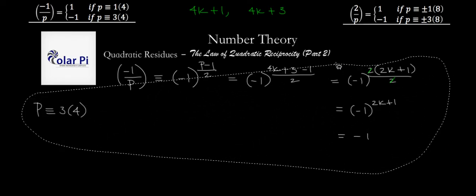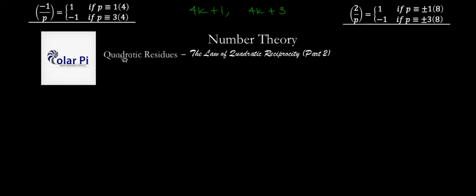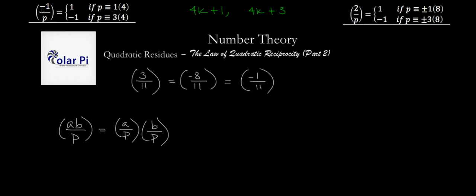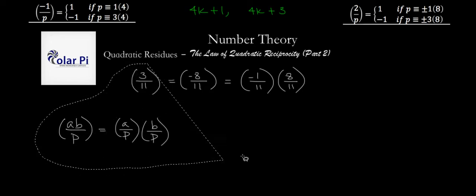Before we go on to (2/P), let's note that what we just learned means we can do things like this: (3/11) is the same as (-8/11). And then knowing from the properties of the Legendre symbol that (A·B/P) equals (A/P)·(B/P), we can write this as (-1/11) times (8/11). So you can calculate each individually and multiply the results to find the answer.